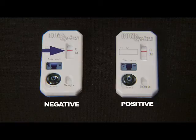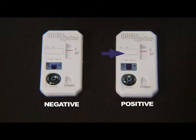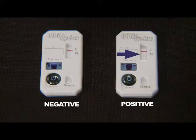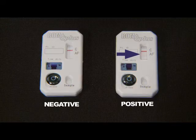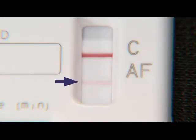Read the test result from five to twenty minutes. Only a control line should be visible for the negative control. Both the control line and the test line should be visible for the positive control. The test is positive even if the stripes are faint.